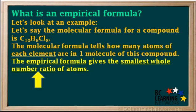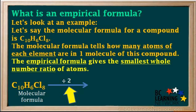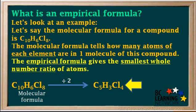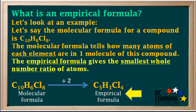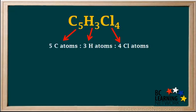The empirical formula gives the smallest whole number ratio of atoms. Taking a look at the molecular formula C10H6Cl8, the subscripts 10, 6, and 8 are all divisible by 2. So we write a new formula in which all the subscripts have been divided by 2, which is C5H3Cl4. This is the empirical formula — it gives the smallest whole number ratio of atoms. The 5, 3, and 4 cannot be reduced any further, meaning for every 5 C atoms, there are 3 H atoms and 4 Cl atoms.